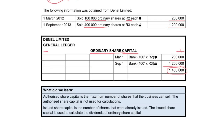What did we learn today? Authorized share capital is the maximum number of shares that you can sell, and this authorized share capital is never used in calculations. The only place you will ever use it is in the note for share capital that will accompany the balance sheet. Issued share capital is the number of shares that was already issued, and it is used to calculate the dividends on the ordinary share capital.